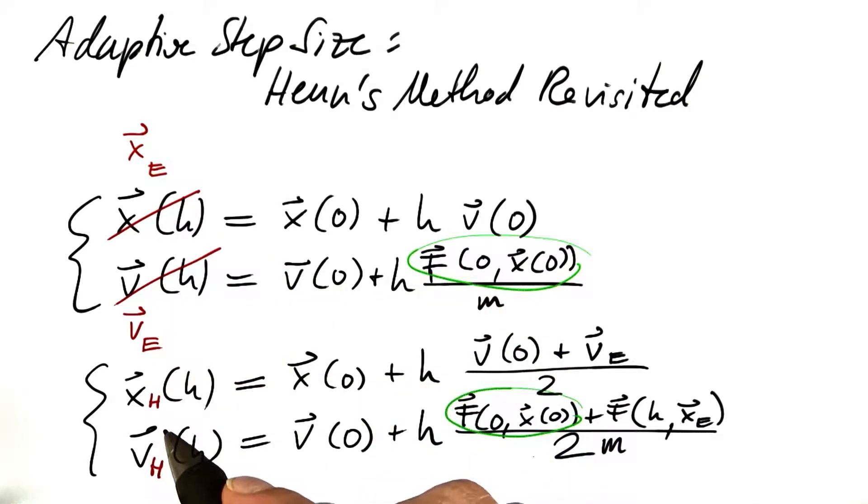And we can compare these estimates to find out the error that we are making. By the way, the technical term for this type of method is an embedded Runge-Kutta method, if you want to look that up.